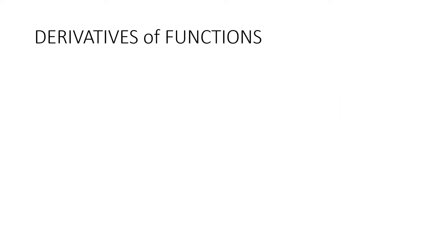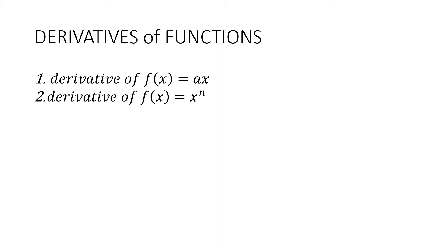The derivatives I will discuss in this lesson video are: the derivative of f(x) = ax, where a is the coefficient and x is our variable with exponent equal to 1; the derivative of f(x) = x raised to n, wherein the coefficient is 1 and x is raised to any real number except 1; and the derivative of f(x) = ax raised to n, where a is any real number coefficient and n is the exponent of x, which is also any real number except 1.